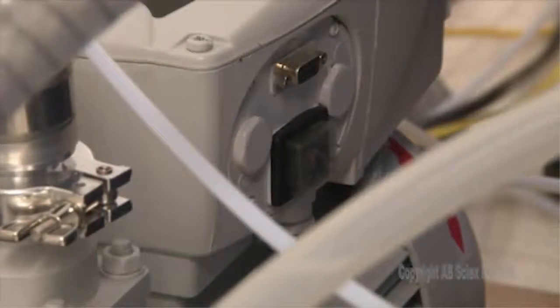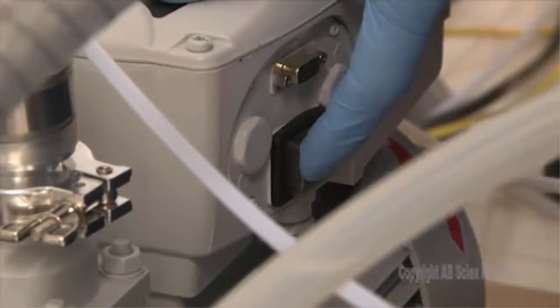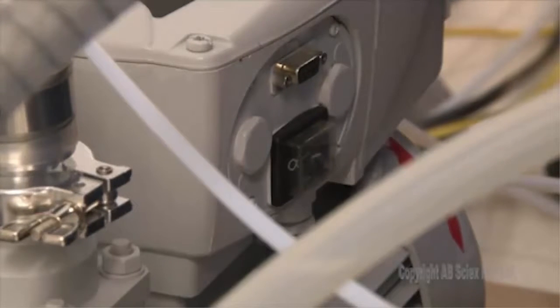On the 4500 series of instruments, the roughing pump must be turned off by hand. The location of the roughing pump power switch may differ per model. For more information, refer to the roughing pump documentation.